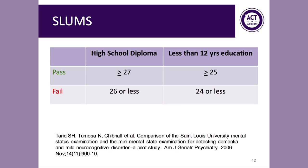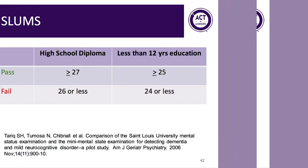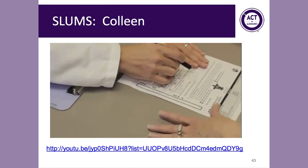An additional benefit of the SLUMS is that it takes into account level of education. The cutoff score is lower if a patient has not graduated from high school, giving them extra points for normal mistakes on the test. On the ACT on Alzheimer's website, you can see an example of Colleen — the patient we met earlier — taking the SLUMS, so you can see an administration video as well as download copies of the test form and watch a scoring webinar.